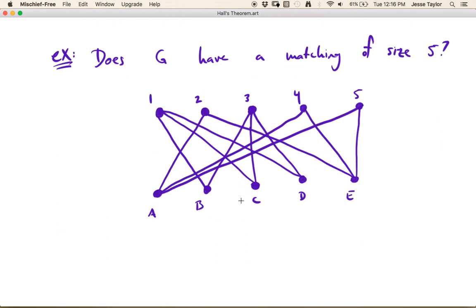Does this graph in purple have a matching of size 5? Okay. So now in this graph, the bipartitions have the same size, right? Our sets U and W both have size 5. So in this case, you can look for a counterexample in either side of the graph, right? Either one can be playing the role of the, quote, small side because they have the same size. Okay.